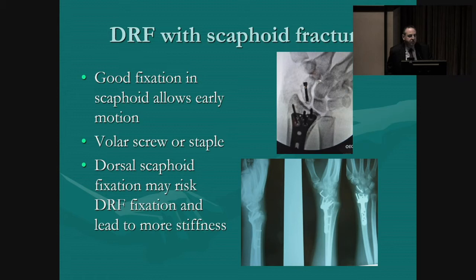Screw fixation is strong enough to allow for early motion in the distal radius so you don't get a stiff wrist. Lately I've taken to putting staples across the scaphoid fracture in the setting of distal radius fracture. It requires less dissection, it's just as strong, and I haven't seen the scaphoids go on to non-union when fixed with a staple, even when the wrist was moved early. You can also fix these scaphoids through a dorsal approach, but then you're adding a volar and dorsal approach, which tends to lead to more stiffness.